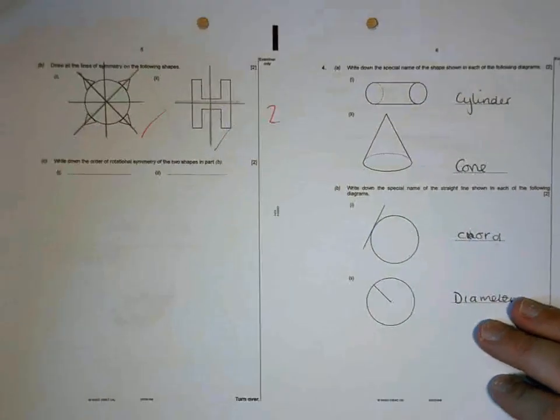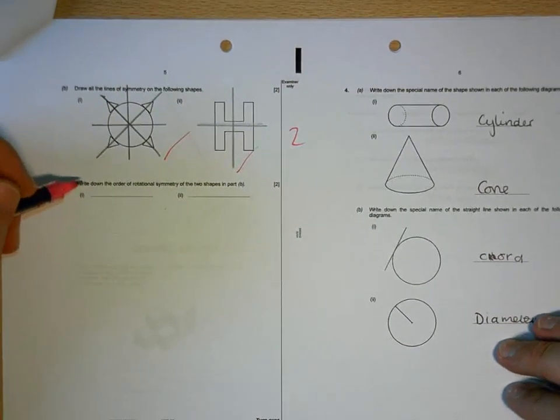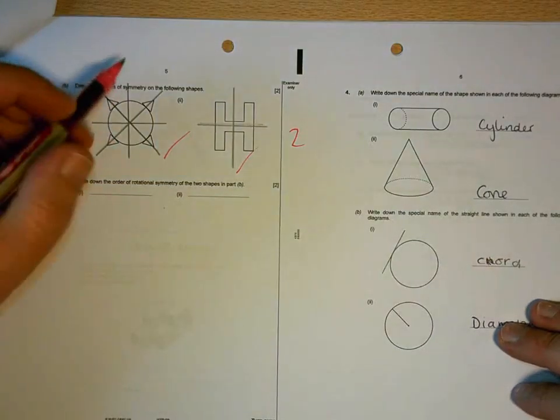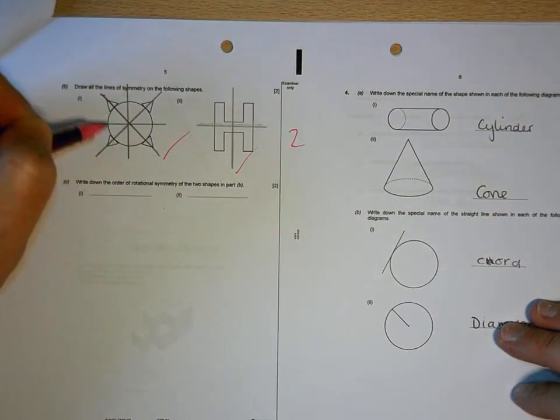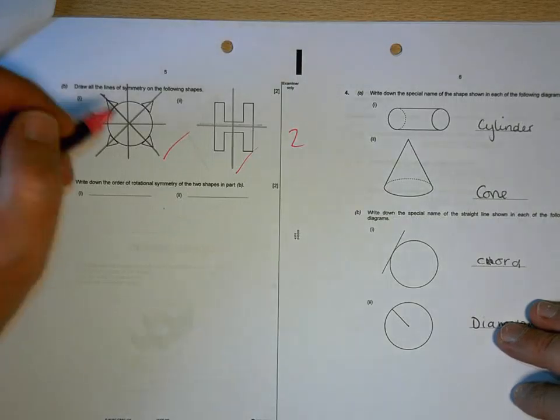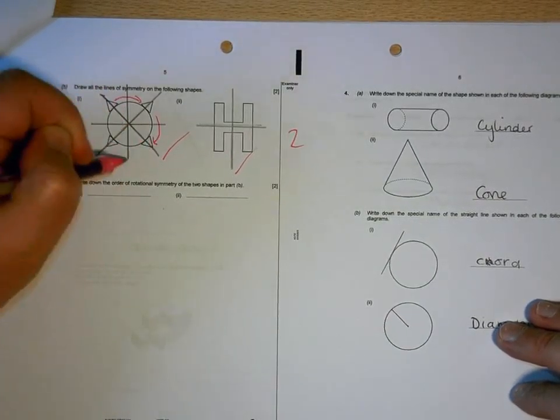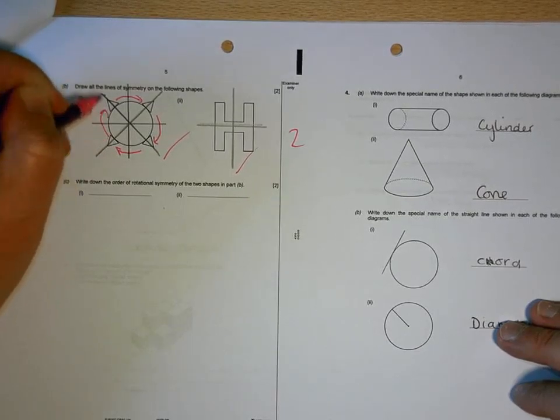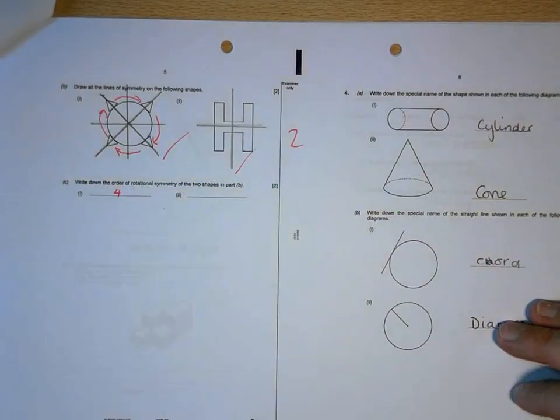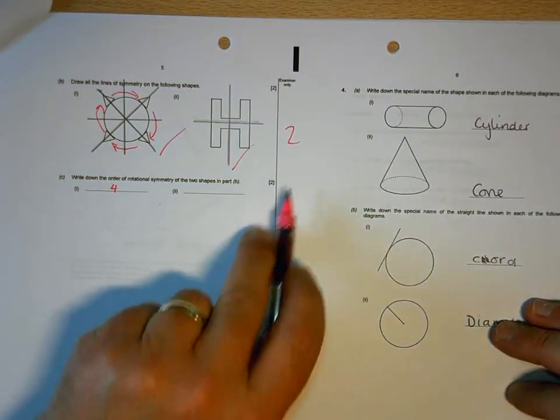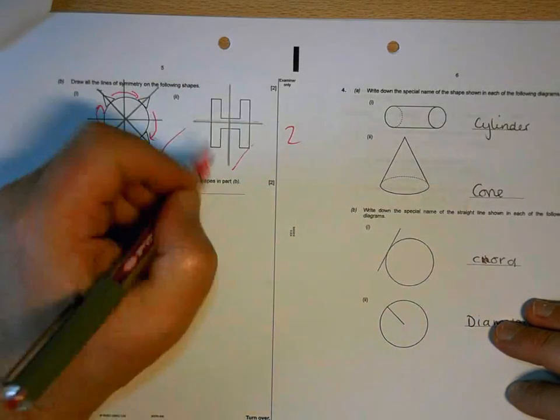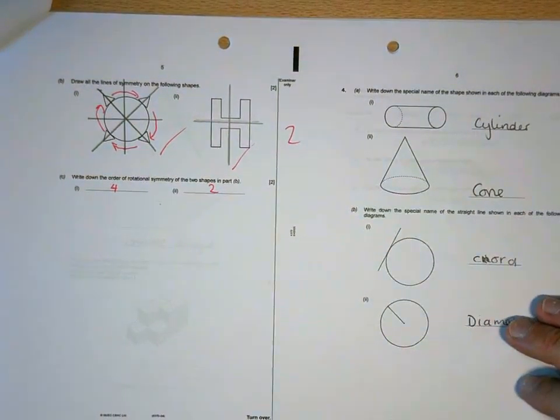Those are correct. Now, rotational symmetry doesn't come up that often, but what rotational symmetry is, is how many times that shape can be turned and look exactly the same as it does there. And with that shape, you can turn it 4 times in that complete turn, and it would look identical. So that would have a rotational symmetry of order 4, whereas this one only looks identical if you turn it upside down. So there are only two positions that that looks the same.